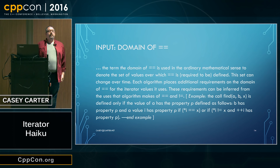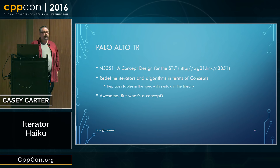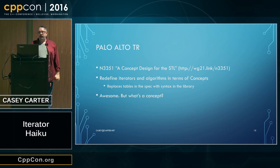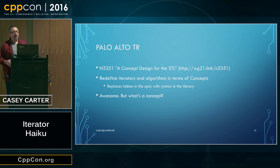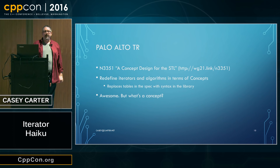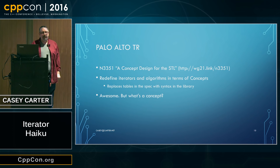We've got these five iterator categories. We're going to move on and talk about how they get affected by the Palo Alto TR. The C++ Standards Committee got together at Palo Alto to talk about how we could apply concepts to C++ without going through the fiasco of concepts during C++ 0x. There was a thing called concepts and they had them in the standard, but they gave up in 2009 — they had 120 different concepts defined and something wasn't right. The implementations didn't work.